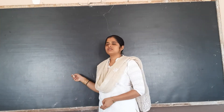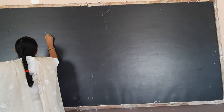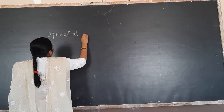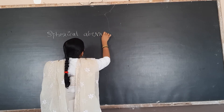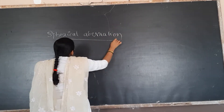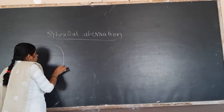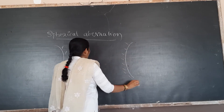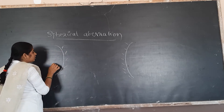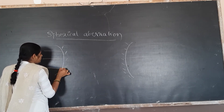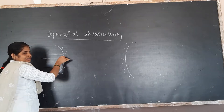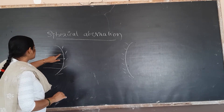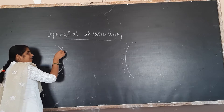Hello students, today we will discuss a new topic called Spherical Aberration. So what is Spherical Aberration? In order to explain this, first we will consider mirrors. So this is a concave mirror. So when a light ray enters the concave mirror, what happens to the light ray? This is the principal axis. When a light ray enters the concave mirror, it will converge.